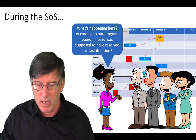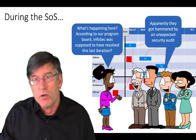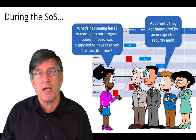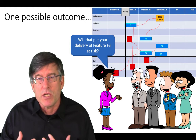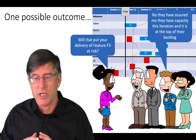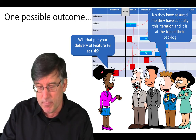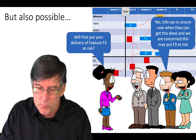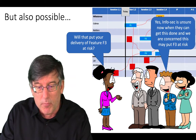At the SOS, the RTE asks: looking at the board, what's happening with this dependency that was supposed to be resolved in the last iteration that's still on the board? Some unexpected event may have happened — for example, InfoSec got hammered by an unexpected security audit. So the question is: does that create a risk for us? The answer might be as simple as no, they assured us they'll get the job done this iteration. But it's also possible it could be a major problem, and the delivery of feature F3 is at risk because InfoSecurity couldn't remove its dependency.